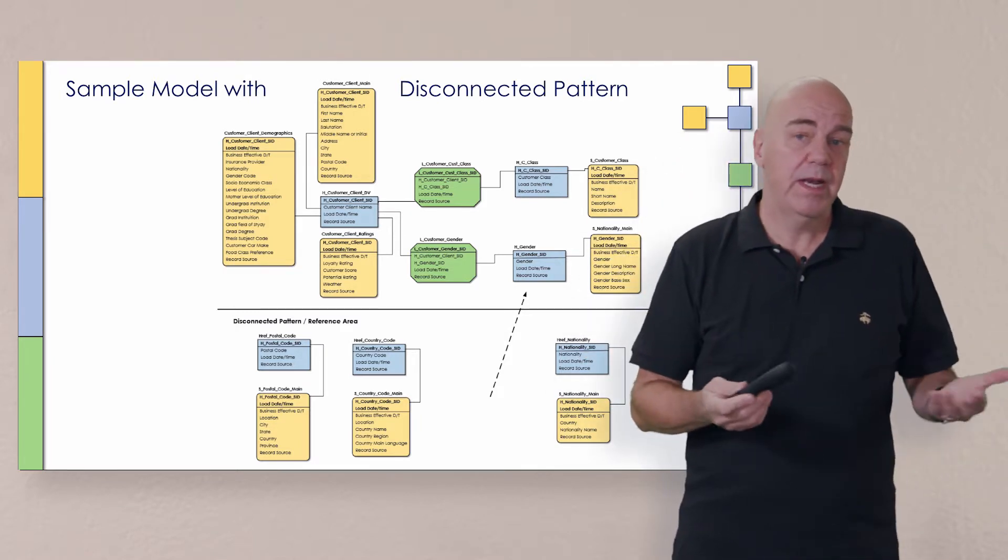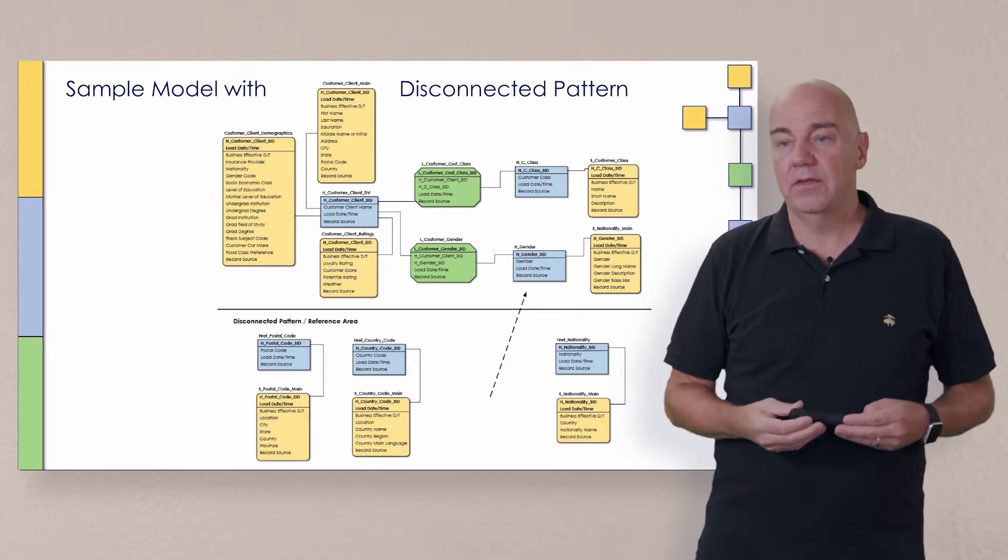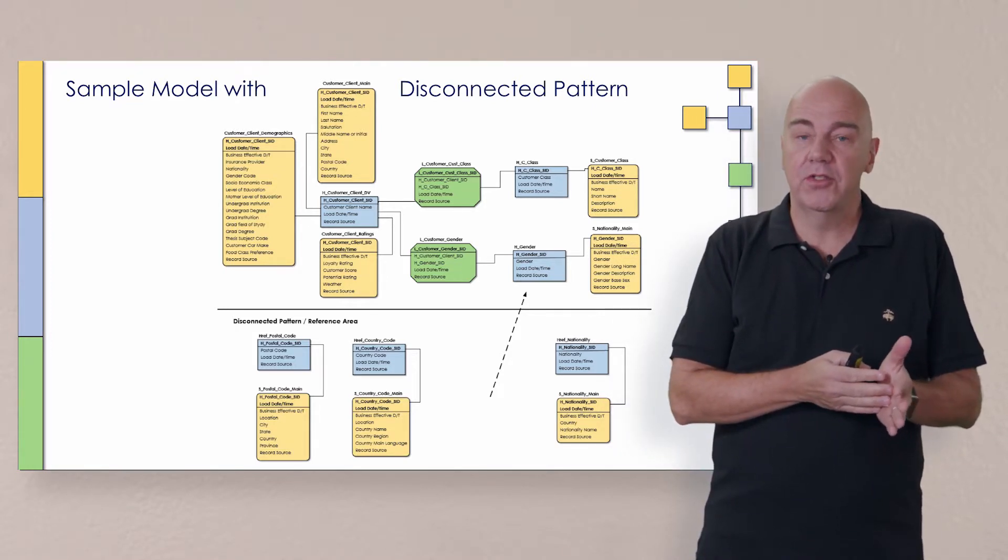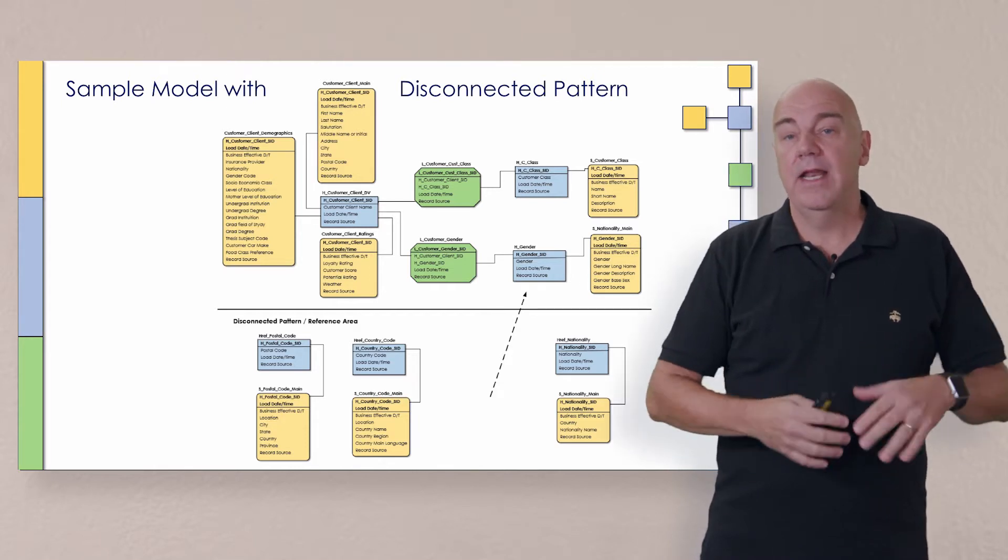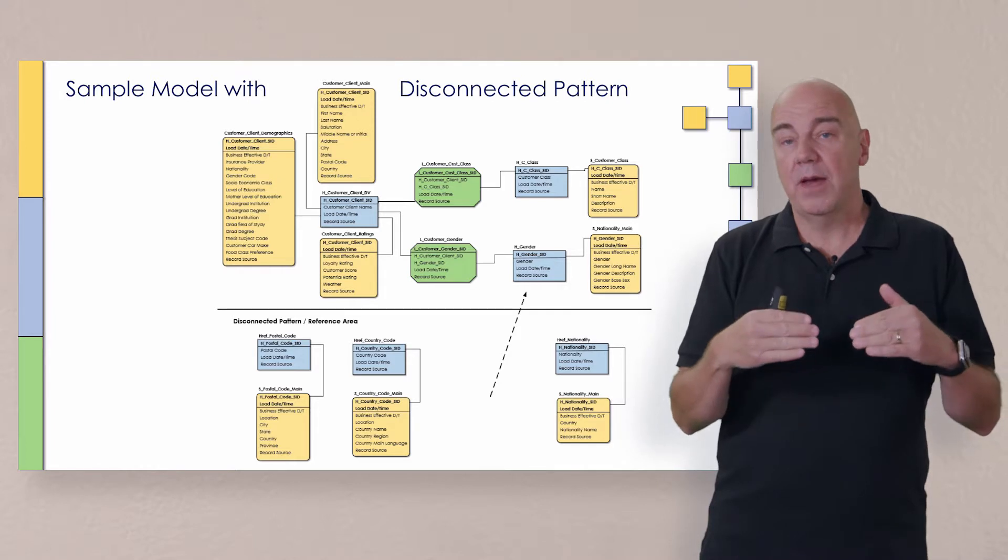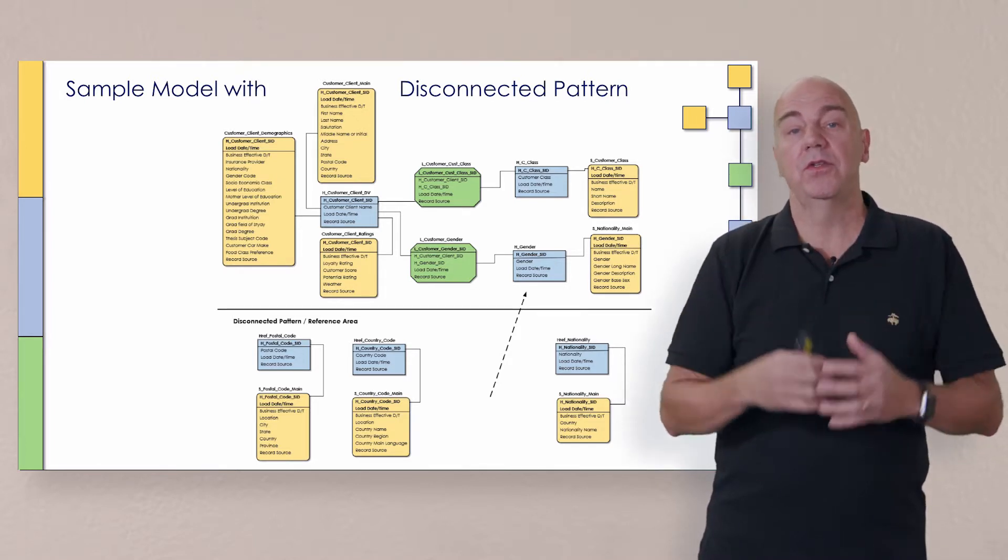You're also going to see in this picture something interesting happening where one of these things got moved up. And what that one happens to be is something like gender code, something that might have been easily understood with a couple values, now has 70, 80 values, not as easy to understand. So it got promoted, it got promoted to the core pattern.